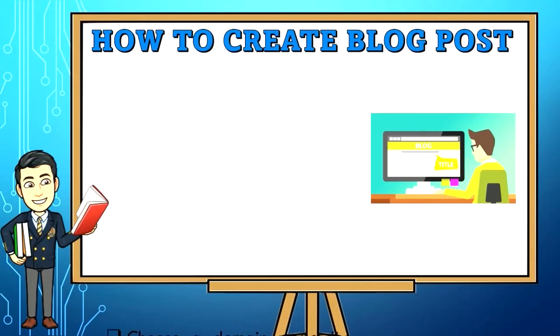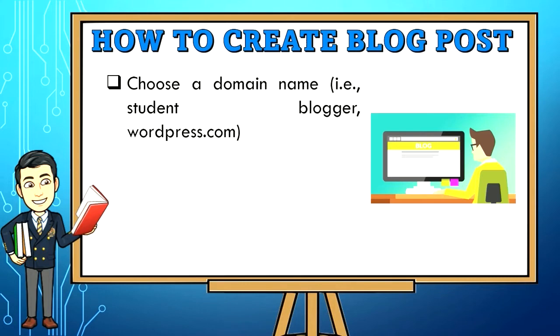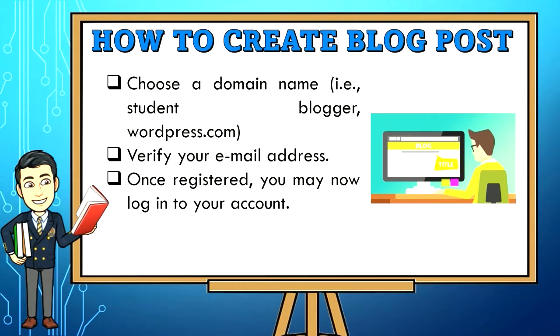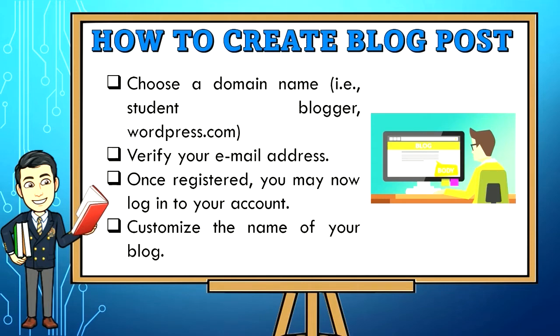Step 3: Choose a domain name — for example, studentblogger.wordpress.com. Step 4: Verify your email address. Step 5: Once registered, you may now log into your account. Step 6: Customize the name of your blog.